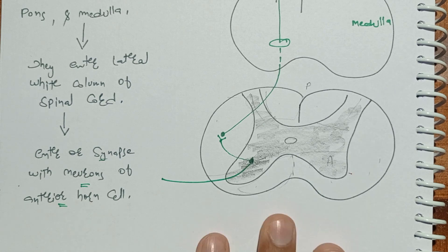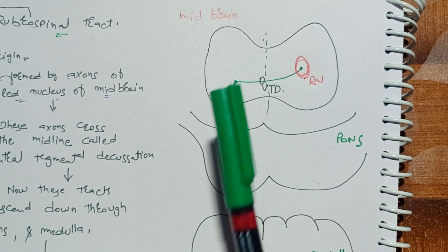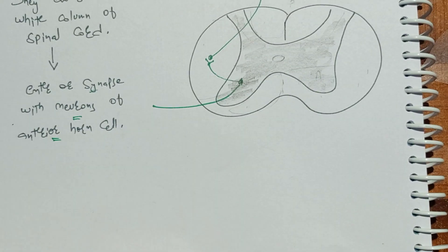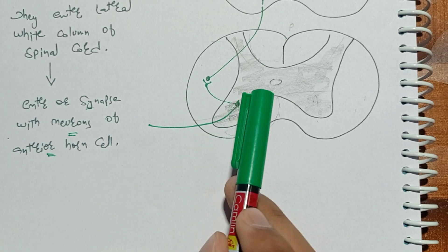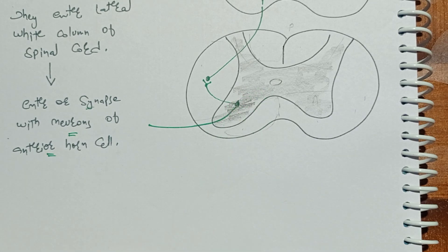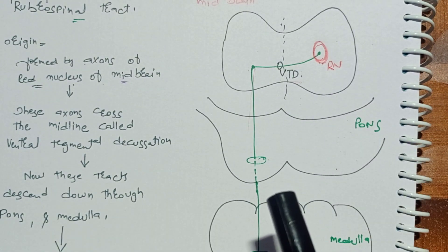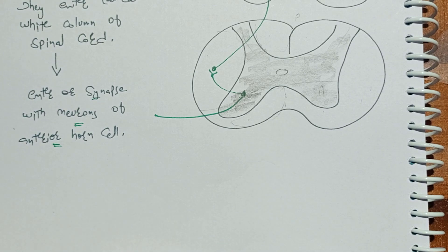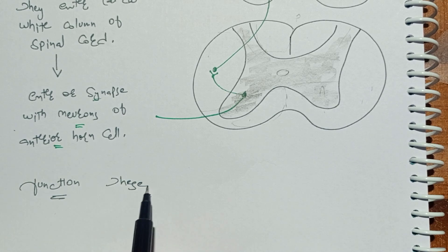So this is all about the rubrospinal tract. It originates in the red nucleus of the midbrain, moves to the opposite side — that's called ventral tegmental decussation — then goes down the pons, then the medulla, then enters the lateral white column of the spinal cord, synapses with the anterior horn cells, and then moves out of the spinal cord. Since it originates in the midbrain and moves toward the spinal cord, it is confirmed as a descending tract.